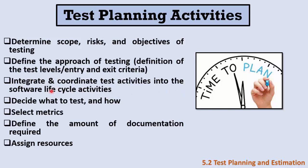We begin to integrate and coordinate the test activities in the software life cycle. For example, in a waterfall model we know when to perform testing after development; in a V-model we perform testing at each level; in agile, testing is coordinated differently. We decide what is going to be tested and how, select the metrics used in the project, and define the amount of documentation required — whether we write test cases, bug reports, and how much documentation is needed.